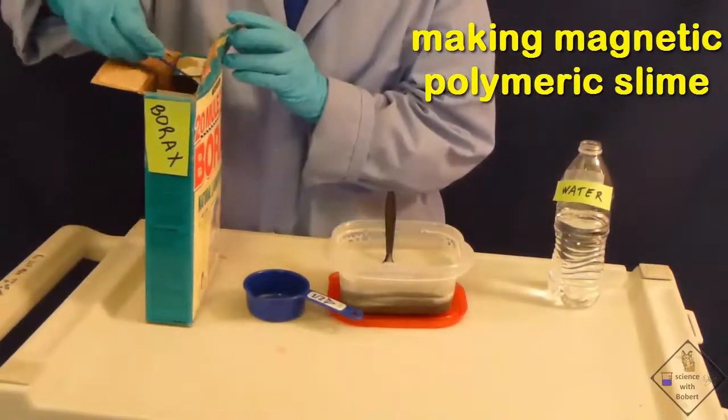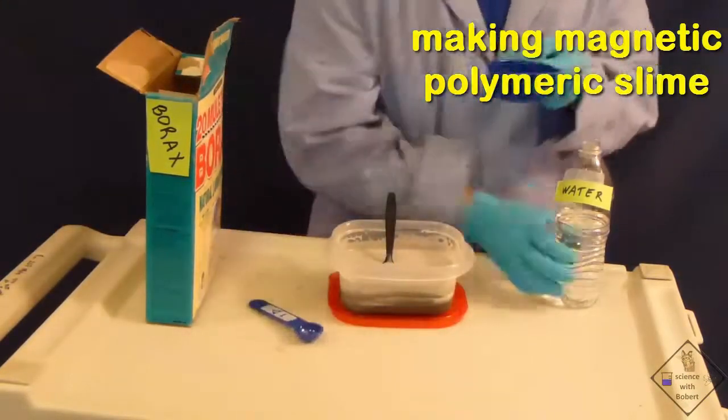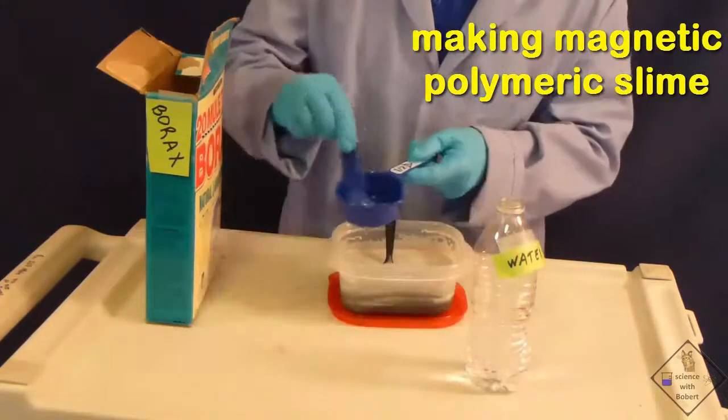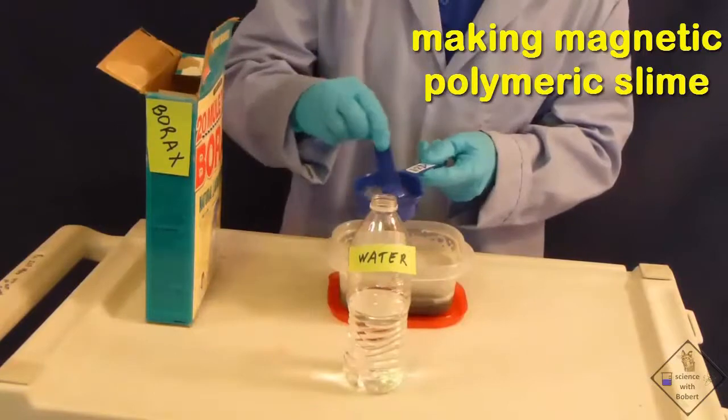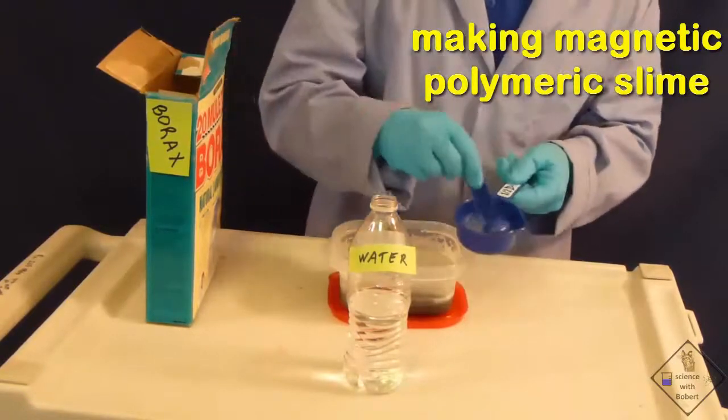He is now preparing the cross-linking agent, borax, by adding one teaspoon of borax to one half cup of water. After mixing, he adds the borax solution to the mixing container.